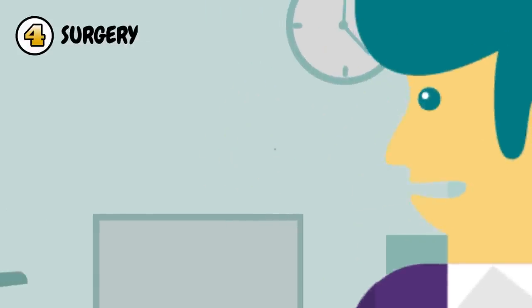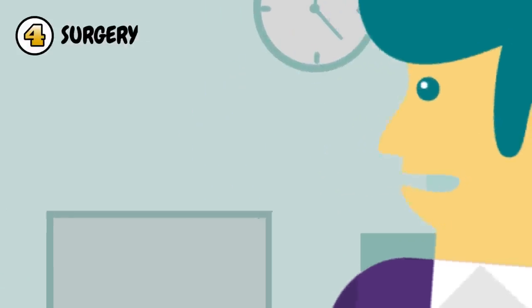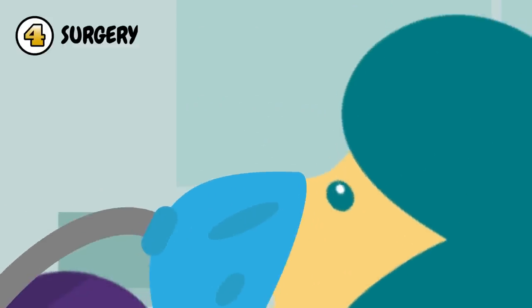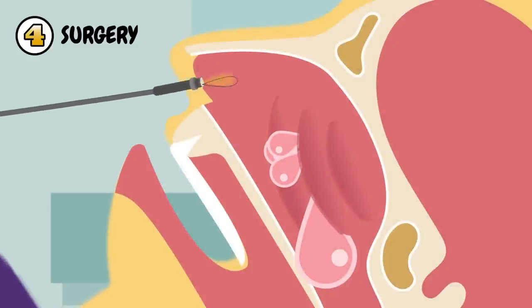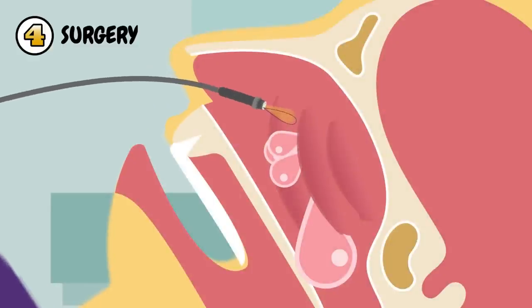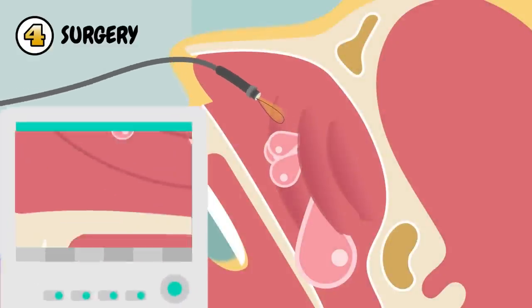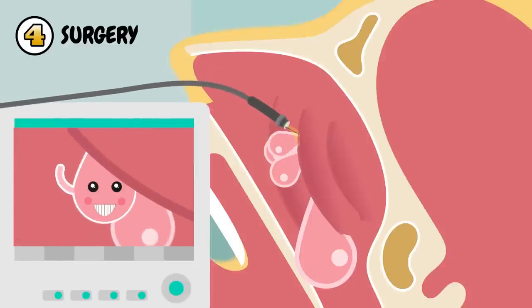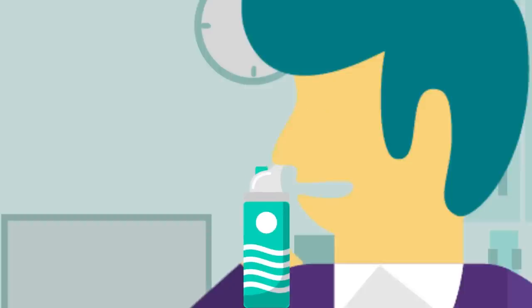4. Surgery — polypectomy, the most common procedure for removal of polyps. The patient is given general anesthesia. A long thin tube with a video camera is inserted into the patient's nose and sinuses. Polyps are then cut out using a microtelescope to visualize and surgical instruments to cut. After surgery, the patient will most likely be prescribed a corticosteroid nasal spray to help prevent reoccurrence.